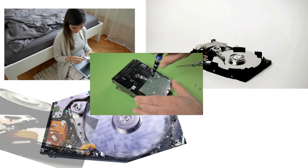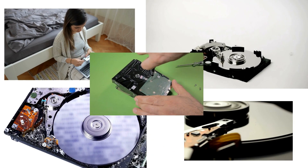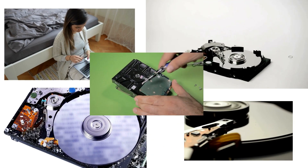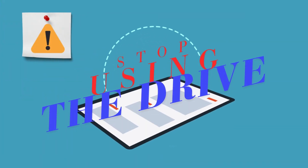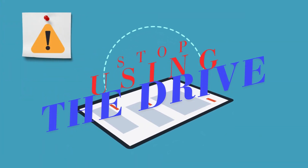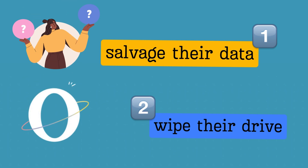Whether you've never had a hard disk crash or you've had several, it's quite common for a computer owner. For guys who encountered this issue, the first thing to do is to stop using the drive in case of more data loss. Users often have two choices when facing a corrupted hard drive: to salvage their data from the damaged device, or to wipe their drive and start from zero completely.